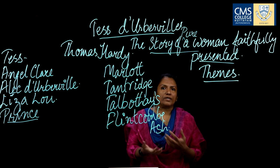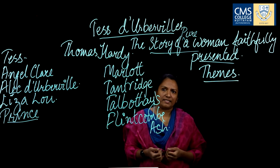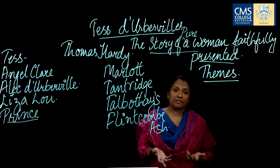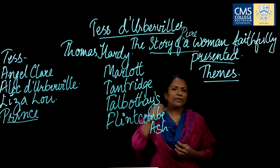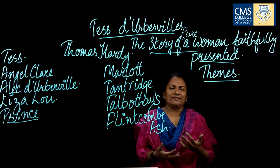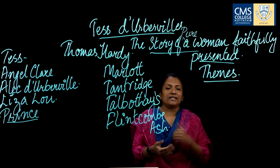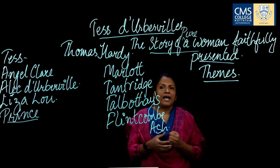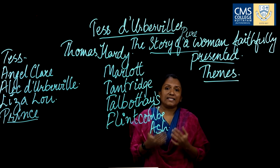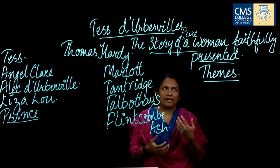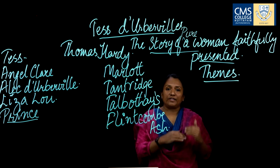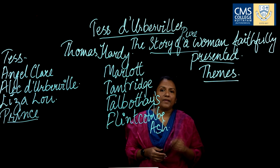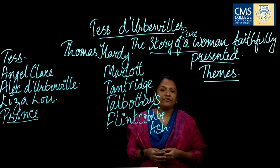Meanwhile, her father John Durbeyfield is not an enterprising person. The depression has affected him; he is partly a drunkard and partly irresponsible — a father one cannot look up to. Then he suddenly hears from somewhere that he is part of a noble lineage bearing the name D'Urberville.